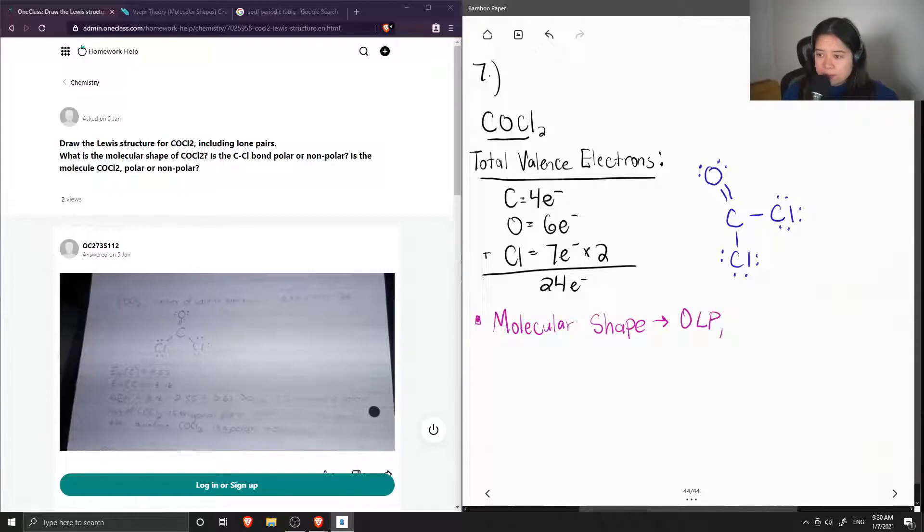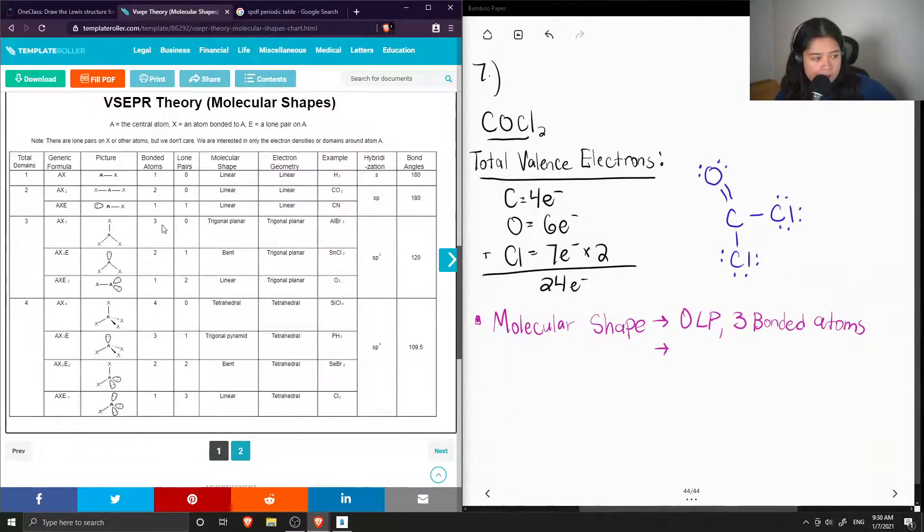And then we also count out how many bonding atoms, how many atoms are bonded with the carbon. So if we count, we have three bonded atoms, which is the one oxygen and the two chlorines. So now let's use the VSEPR table to find out its molecular shape. So if we look at the total domains, that is three.